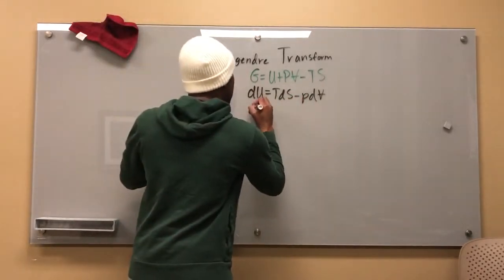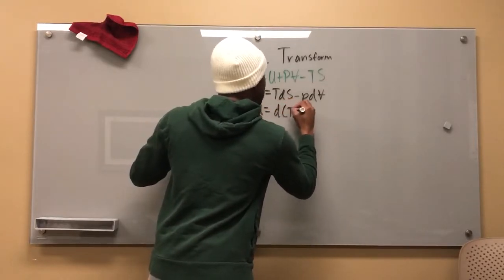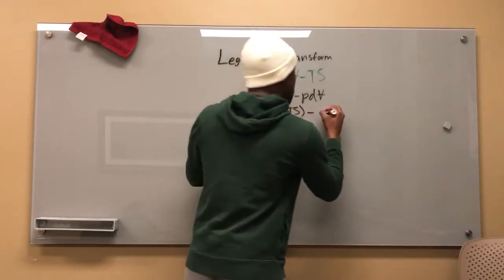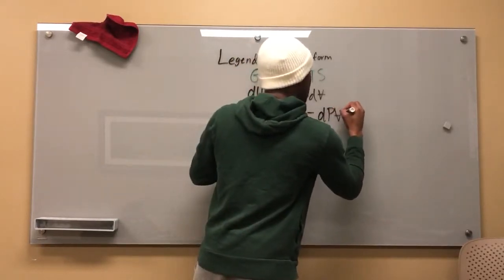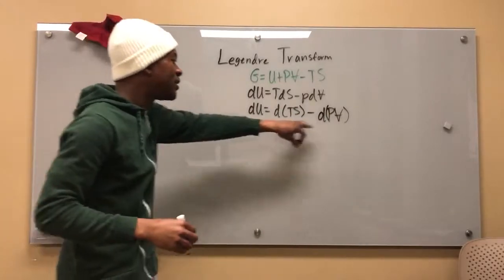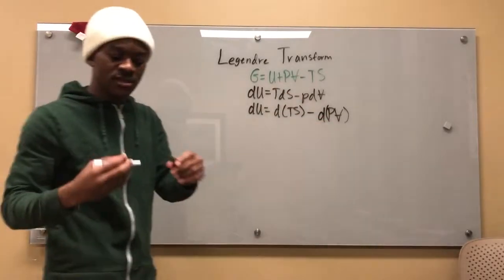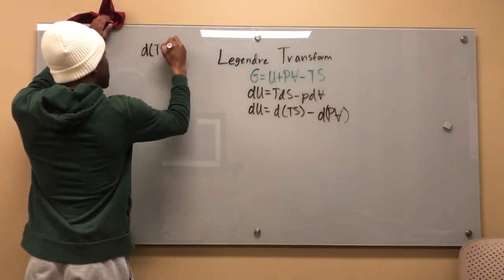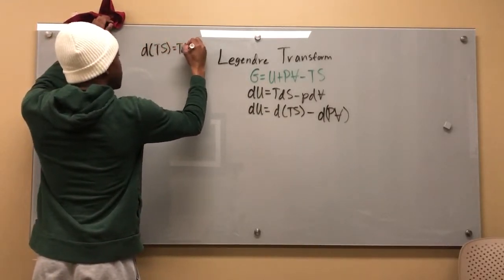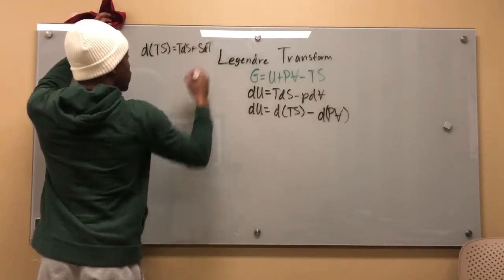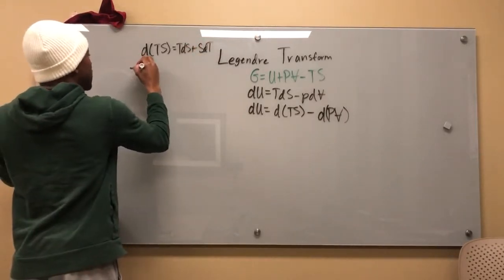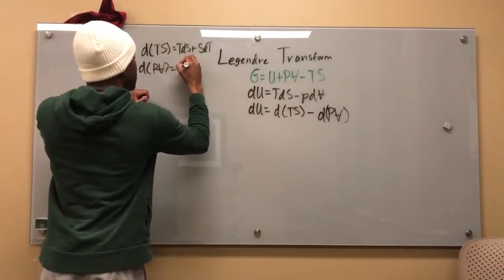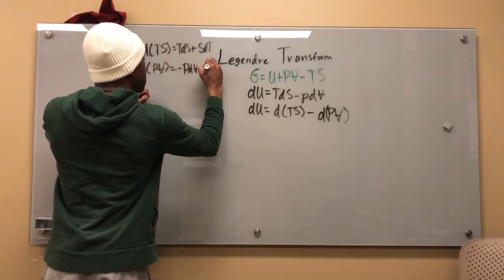So now I'm going to take my DU and say that that's equal to TS minus, or sorry, DTS minus DPV. Now, how can I write these in terms of D's, right? I know that DTS is equal to TDS plus SDT, right? And I know that DPPV is equal to negative PDV minus VDP.